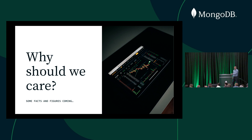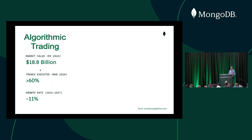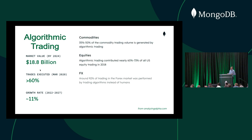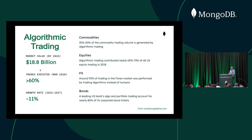Why should all of us in the room care about algorithmic trading? It's a big industry. I pulled some real numbers from the internet — it's a big industry and it's only going to get bigger, with data across different asset types. More and more trading is done electronically and via algorithms. If you work in financial services, you most likely use algorithmic trading already. If not, you'll probably use it soon. And for those who want to move into financial services, it definitely helps to know what algorithmic trading is and maybe be able to build a simple scenario like the one we'll look at today.